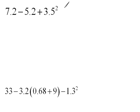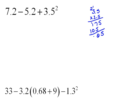3.5 squared literally means to multiply 3.5 times 3.5. We can do that out to the side. 5 times 5 is 25, 5 times 3 is 15 — carry the 1, that's 16, 17. 3 times 5 is 15, 3 times 3 is 9 plus 1 is 10. So that gives us 5, 12, 2, 1. We move the decimal two places back in, so 3.5 squared is 12.25.